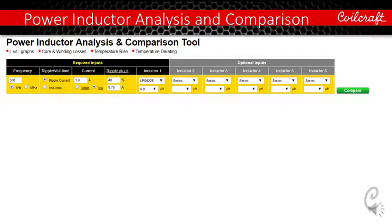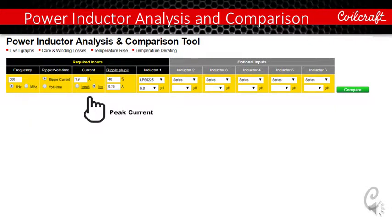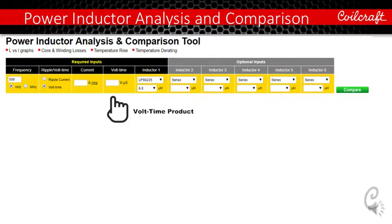You can enter your operating conditions here for your applications such as switch frequency, peak current or average inductor current, and the ripple current going through the inductor. Or if you know your volt-time product for your converter design, you can enter your volt-time product here. Then our tool will calculate the ripple current for you so you can compare the losses based on different ripple current for different inductance values.